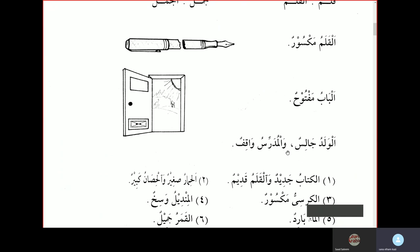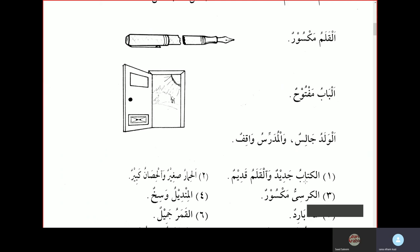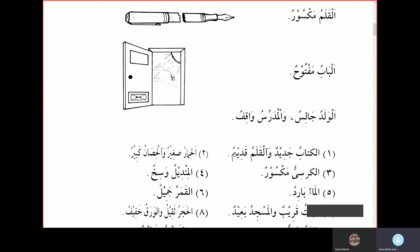Al-waladu jalisun wal-mudarrisu wakhifun - the boy is sitting and the teacher is standing. Al-kitabu jadeedun wal-kalamu kadeemun - the book is new and the pen is old. Al-himaru sagheerun wal-hisanu kabeerun - the donkey is small and the horse is big.